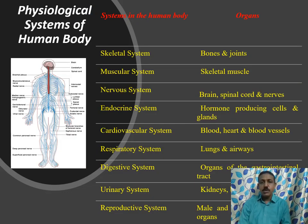Now we shall see about the physiological systems of the human body. The bones and joints form the skeletal system and the skeletal muscles form the muscular system. The brain, spinal cord, and nerves constitute the nervous system. Hormone-producing cells and glands form the endocrine system. Blood, heart, and blood vessels form the cardiovascular system. Lungs and airways form the respiratory system. Organs of the gastrointestinal tract form the digestive system. Kidneys and urinary tract form the urinary system, and male and female reproductive organs form the reproductive system.